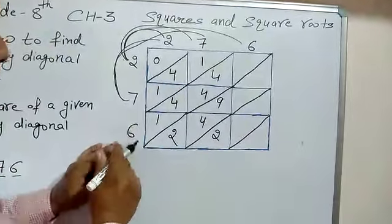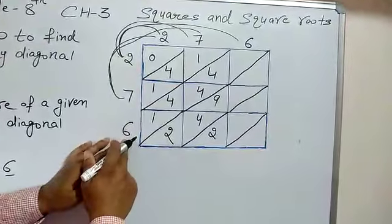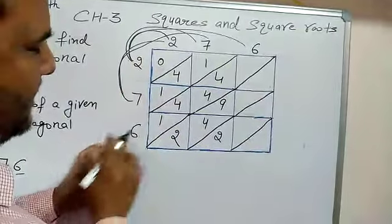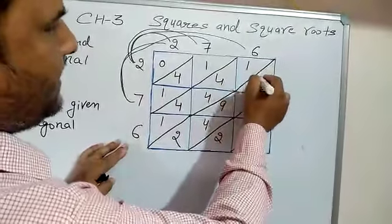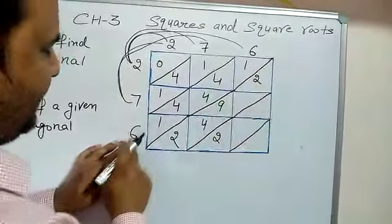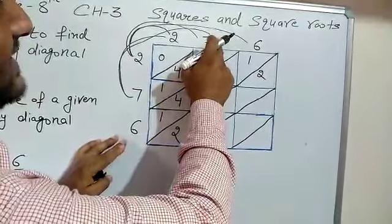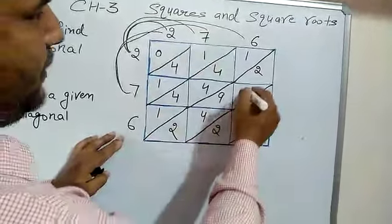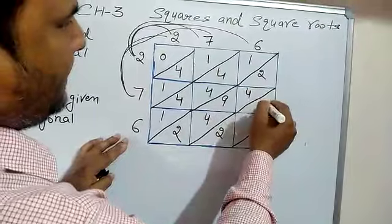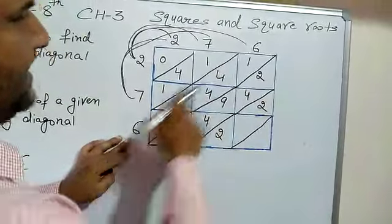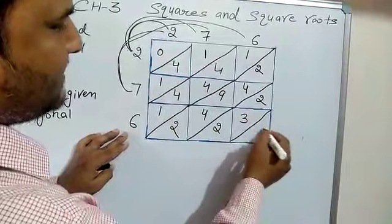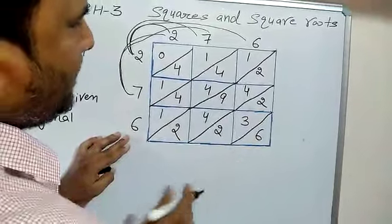Then the last digit, 6. First, 6 multiplied by 2: 6 twos are 12. Then 6 multiplied by 7: 6 sevens are 42. Then 6 multiplied by 6: we get 36. So the multiplication part is now complete.